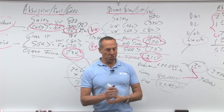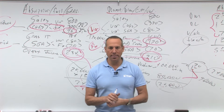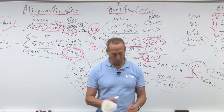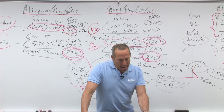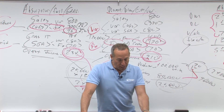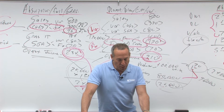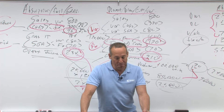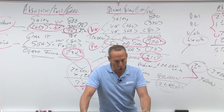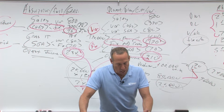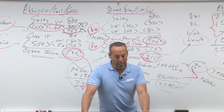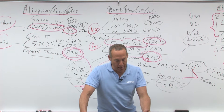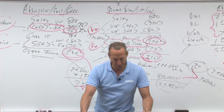Let's do some questions to practice absorption versus direct costing. Question number eight: Keiko's fixed manufacturing overhead cost totaled $100,000 and variable selling cost totaled $80,000. Under direct costing — that's also called direct, prime, variable, or contribution costing — how should these costs be classified?